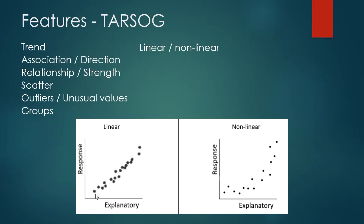Linear means that the data points follow a straight line — the trend is in a straight line. Non-linear means that we can't fit a straight line to the data points; instead we get a much more curved line.